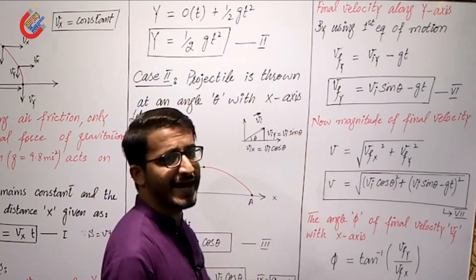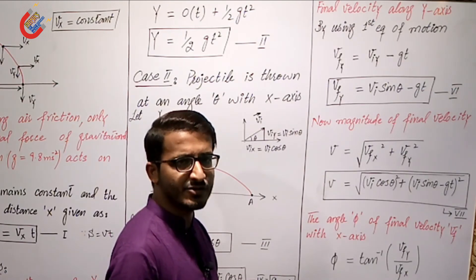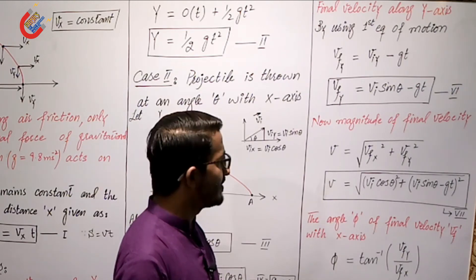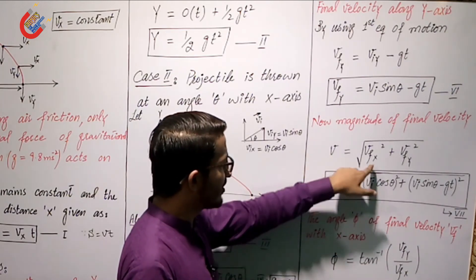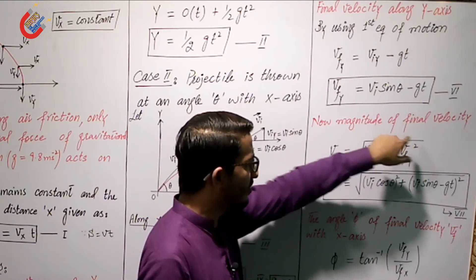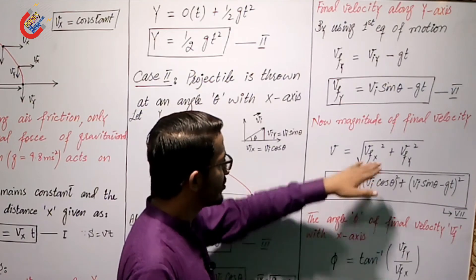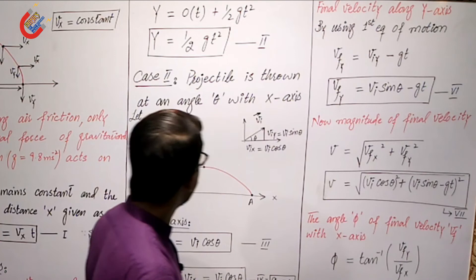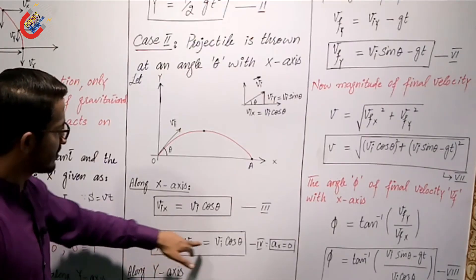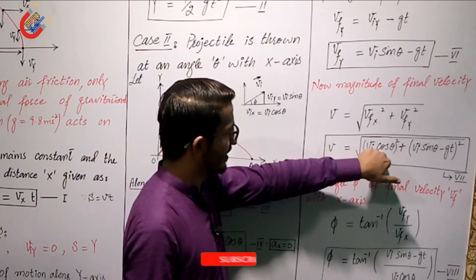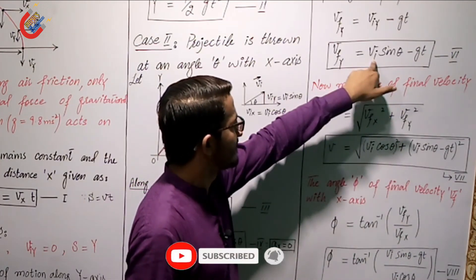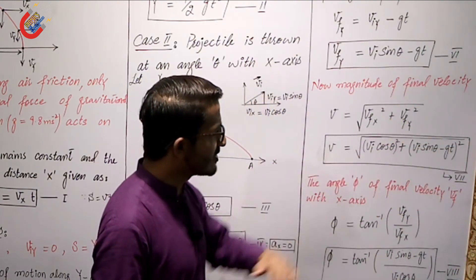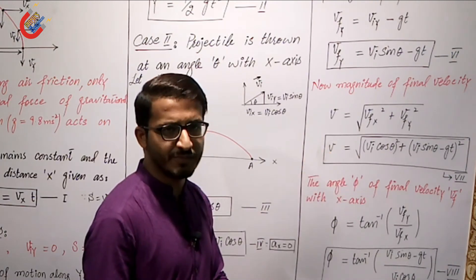To find the magnitude of the final velocity, recall that the magnitude of any vector equals the square root of the sum of squares of its x and y components. So the magnitude of final velocity is: Vf = √(Vfx² + Vfy²). Substituting Vfx = Vi·cosθ and Vfy = Vi·sinθ − gt, we get equation number 7 representing the magnitude of the final velocity of the projectile.